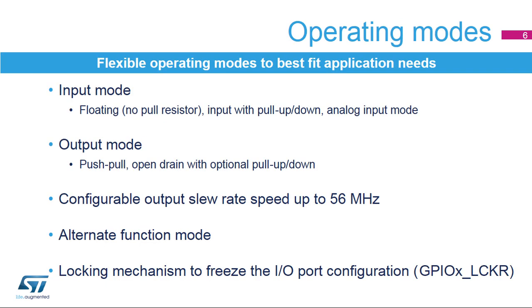General purpose I/O pins can be configured into several operating modes. An I/O pin can be configured in an input mode with floating input, input mode with an internal pull-up or pull-down resistor, or as an analog input. An I/O pin can also be configured in an output mode with a push-pull output, or an open-drain output with an internal pull-up or pull-down resistor. For each I/O pin, the slew rate speed can be selected from four ranges to ensure the best compromise between maximum speed and emissions from the I/O switching and to adjust the application's EMI performance.